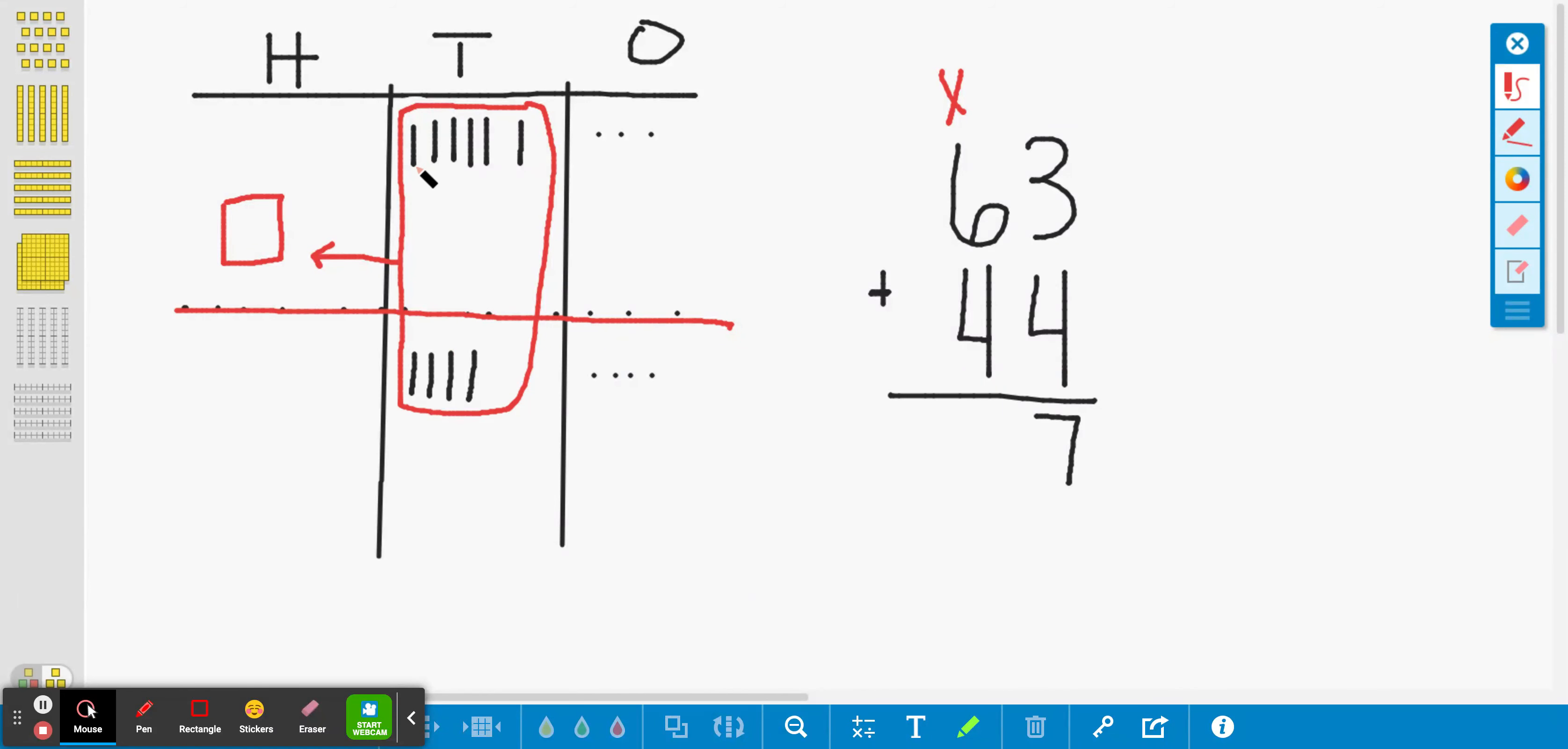So these now, these ten tens that we counted, count them with me again. At this time we're going to count one, two, three. One, two, three, four, five, six, seven, eight, nine, ten. Yeah. Six plus four makes ten tens. And we know ten tens makes one hundred.